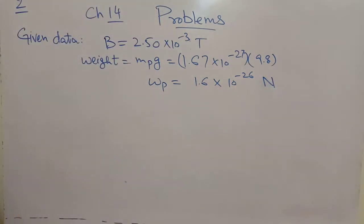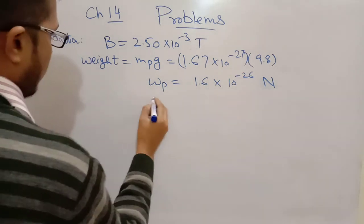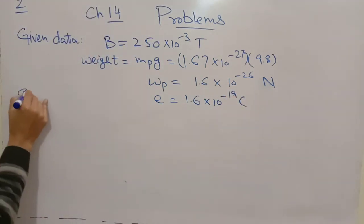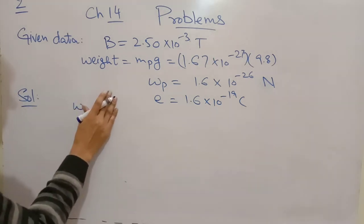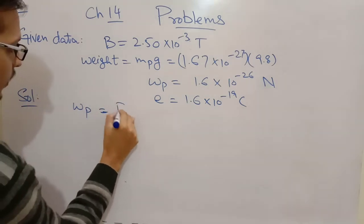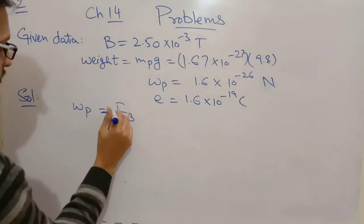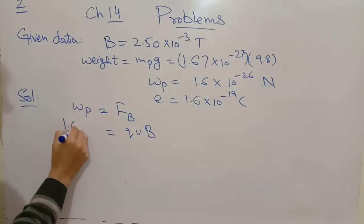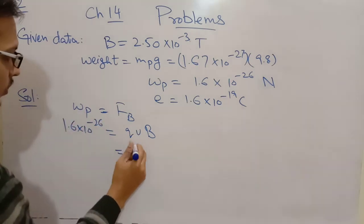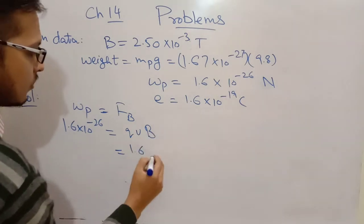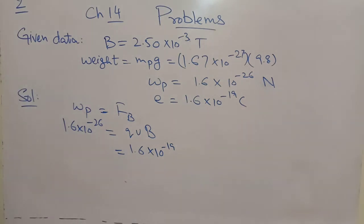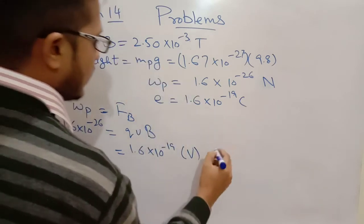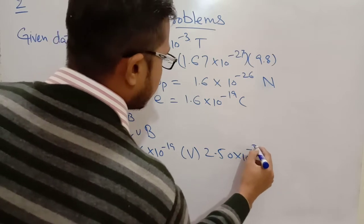अब इसके अलावा charge of electron यूज होगा तो charge 1.6×10⁻¹⁹ coulomb के बराबर होता है। Solution इस तरह से आएगा: weight of proton is equal to magnetic force F_B. Magnetic force का formula होता है qvB. Weight जो है वो हम calculate कर चुके हैं: 1.6×10⁻²⁶, और यहाँ q की जगह 1.6×10⁻¹⁹ put करेंगे। Velocity हमने calculate करनी है। B की value 2.50×10⁻³ given है।